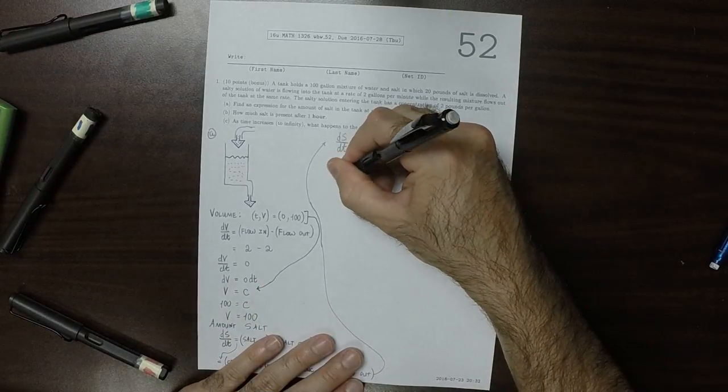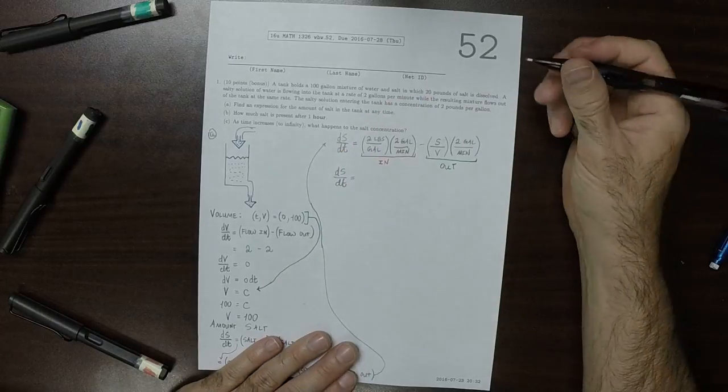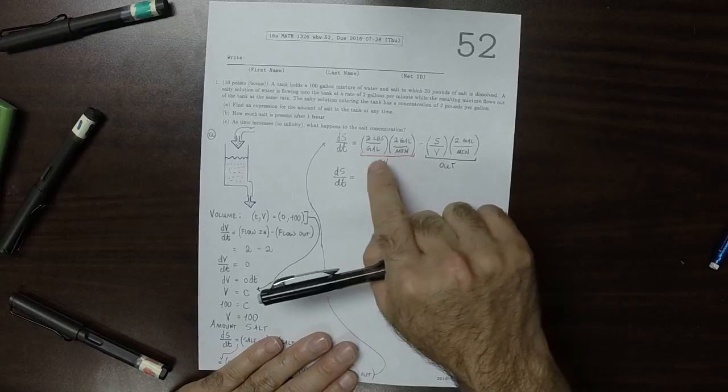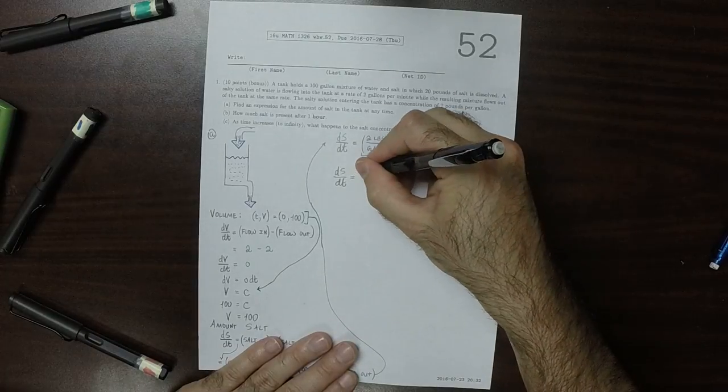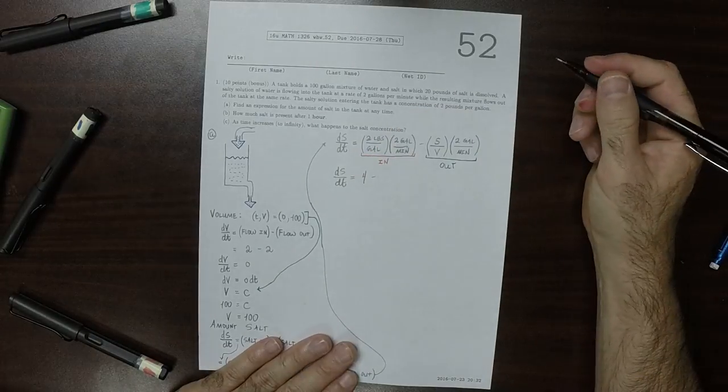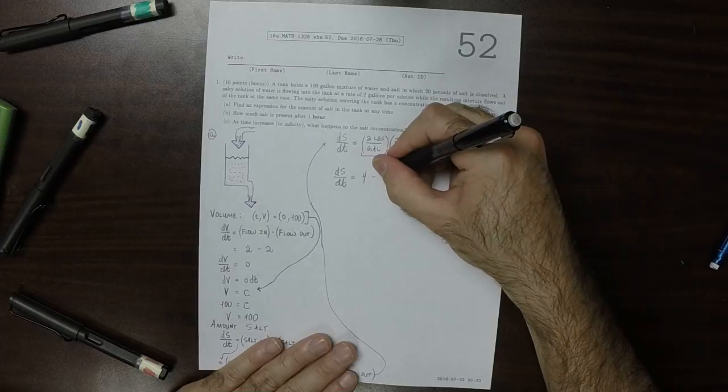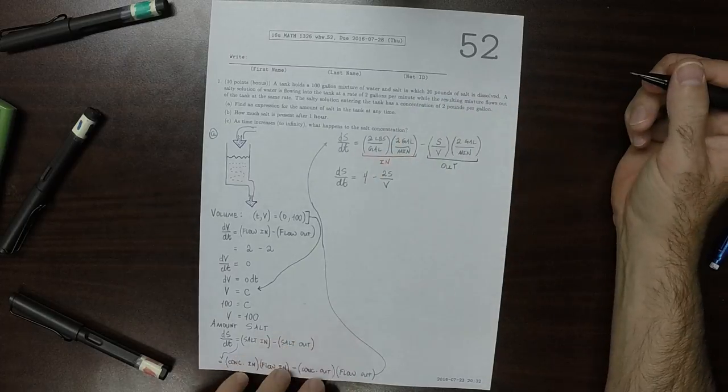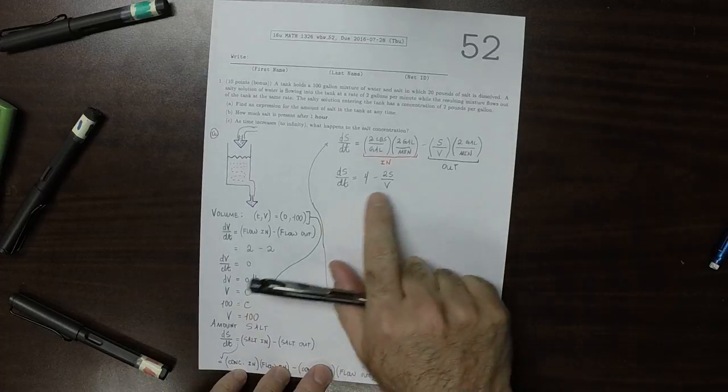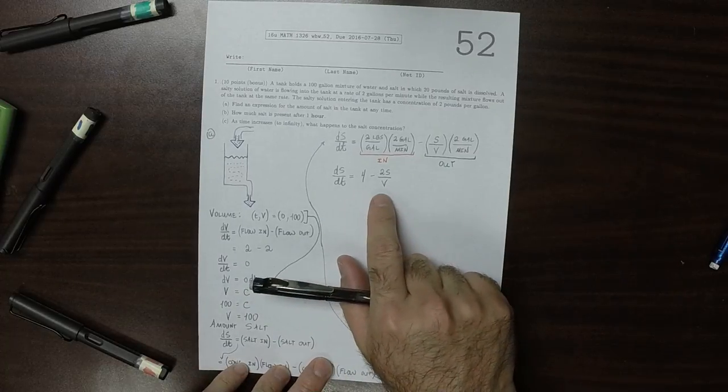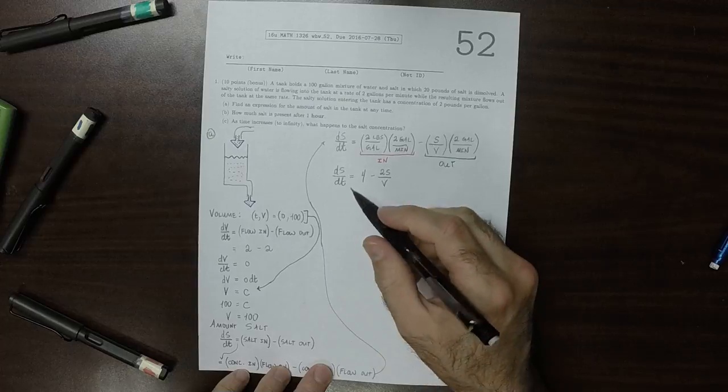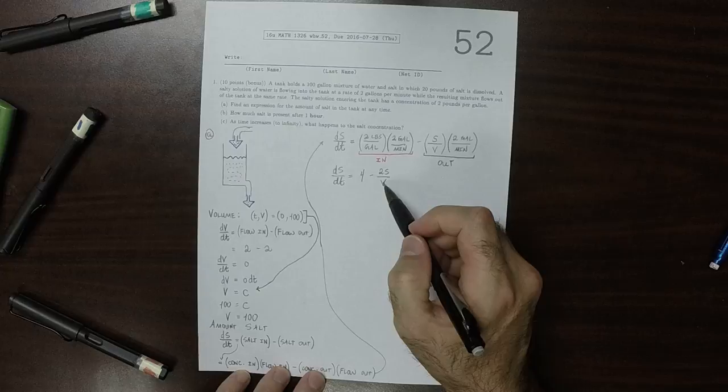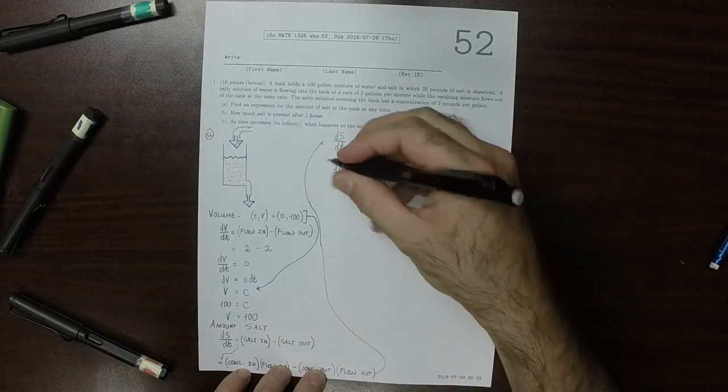So simplifying, dS/dt, ignoring the units now, that will be 4 minus 2S over V, and that would be a little bit of a problem, because the differential equation, we want it to have only S's and t's, and we have a V here, so that's not good. But we already figured out that V was 100.